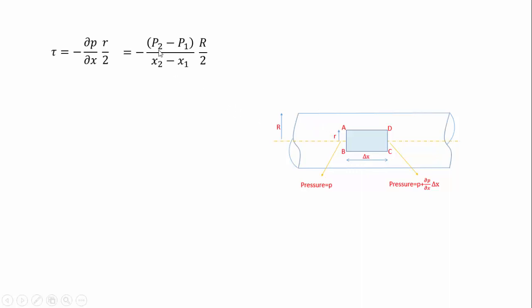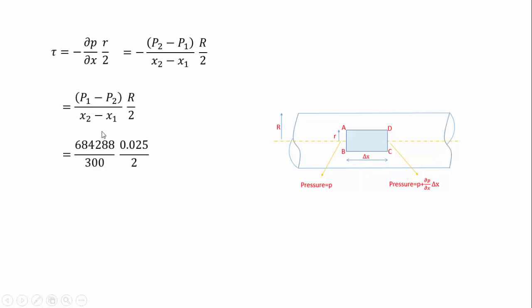Now we substitute the values: τ = (P1 − P2)/(X2 − X1) × R/2. X2 − X1 is the pipeline length of 300 meters. P1 − P2 is the pressure drop we calculated previously, which is 684,288 N/m². The radius R is the pipe diameter 0.05 m divided by 2. Substituting all these values, we get the shear stress at the pipe wall as 28.512 N/m².